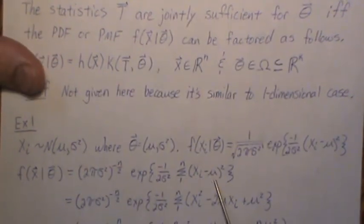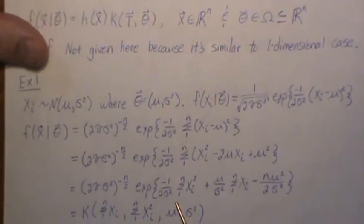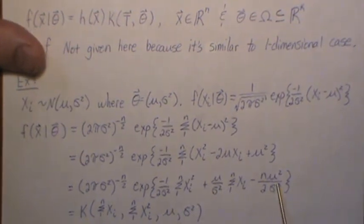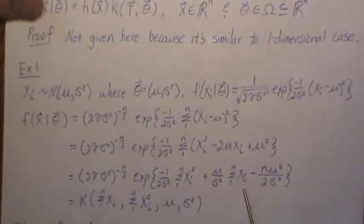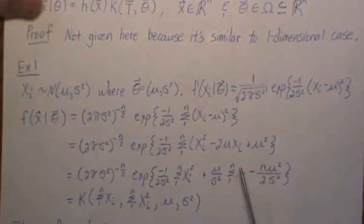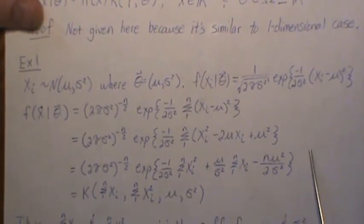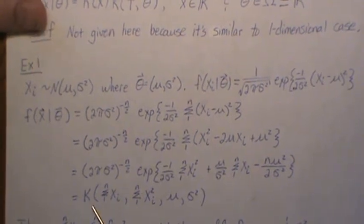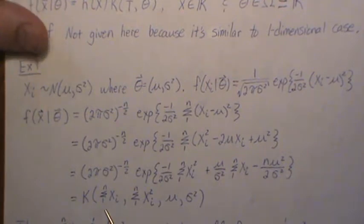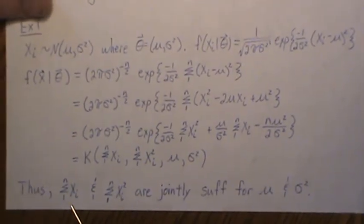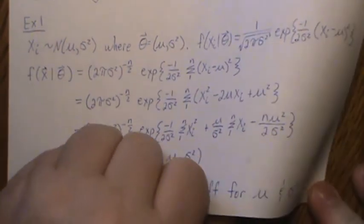If we expand the quadratic and distribute the summation sign, we get an expression that is a function of the parameters mu and sigma squared and two statistics: the sum of Xi and the sum of Xi squared. This can be factored — h is just 1 — and k is a function of mu and sigma squared and the data only through these two statistics. So the sum of Xi and the sum of Xi squared are jointly sufficient for mu and sigma squared.